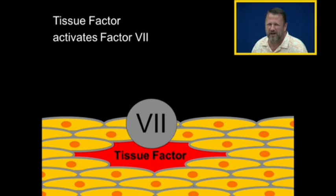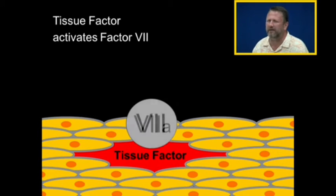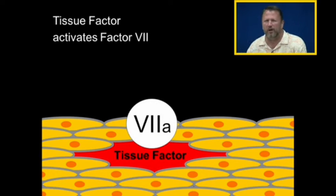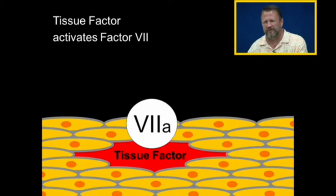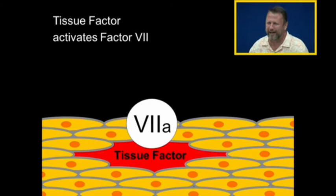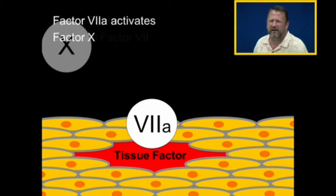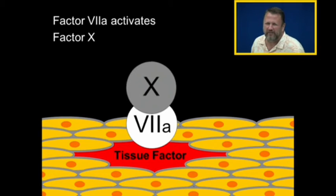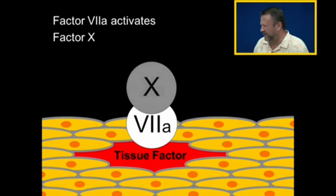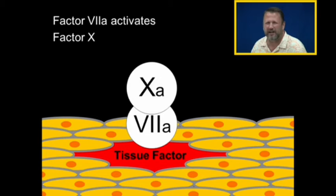Factor seven has come in contact with the damaged endothelial lining and become activated. When you look at the coagulation factors, when they become activated, we call them 'A.' Now that we have an activated seven, it can activate factor 10. When it activates factor 10, that becomes factor 10a.